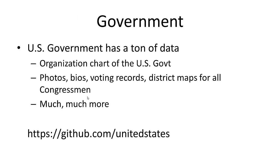Government. The U.S. government is one example — they have a ton of data, especially Congress. There's an organizational chart of the entire U.S. government, photos, bios, voting history, and district maps for all congressmen, including a history of district maps using the mapping features. There's a ton of data from the U.S. government at github.com/unitedstates.